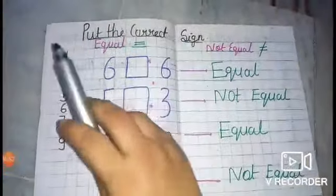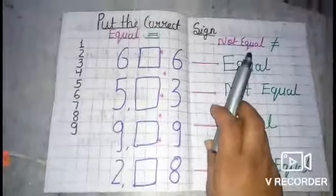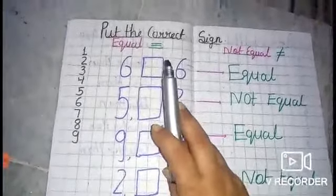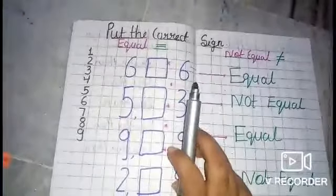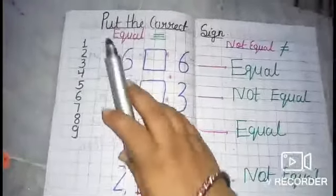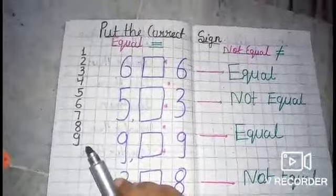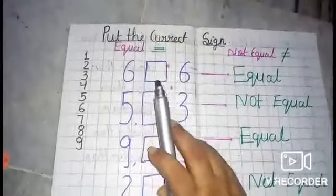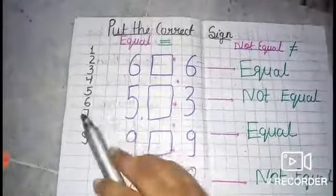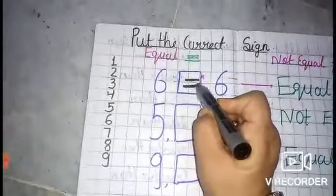Our next concept is equal sign and not equal sign. Students, the equal sign and not equal sign — all of you know counting one to nine. Six and six — the symbol of six and six equal, so the sign is equal.